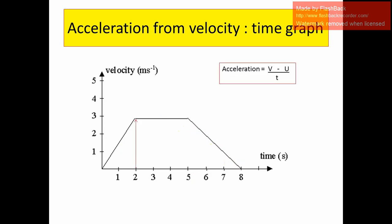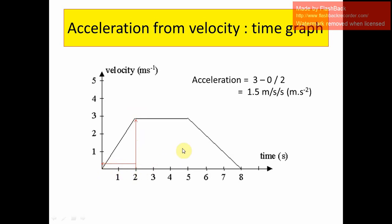Acceleration can be calculated as the change in speed divided by time. For example, the change in speed is 3 minus 0, and the change in time is from 0 to 2 seconds, so acceleration equals 3 divided by 2, which is 1.5 meters per second squared. Thank you, and in the next lesson we will continue with other graphs for motion.